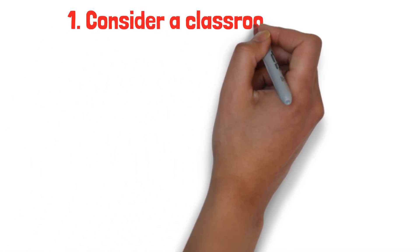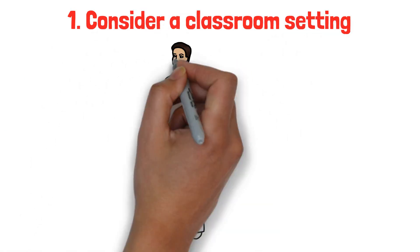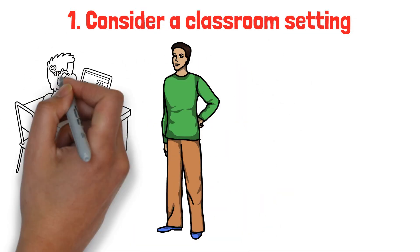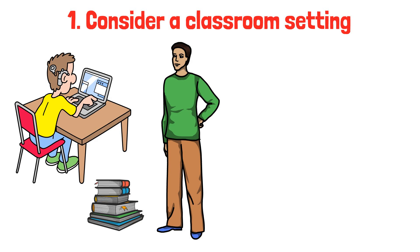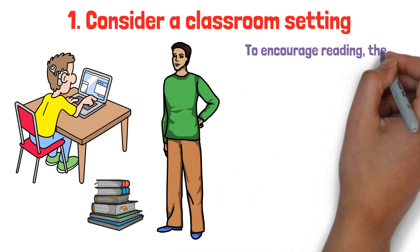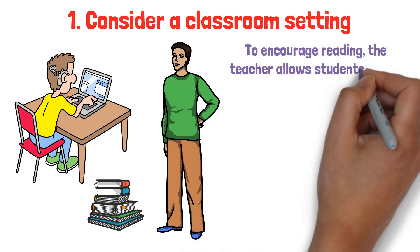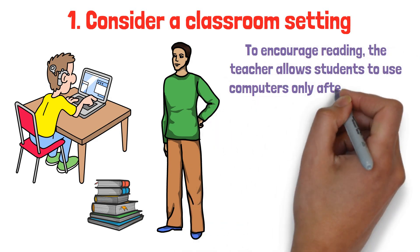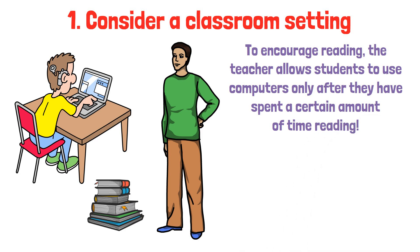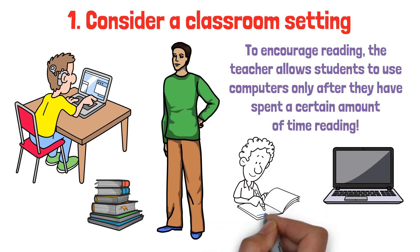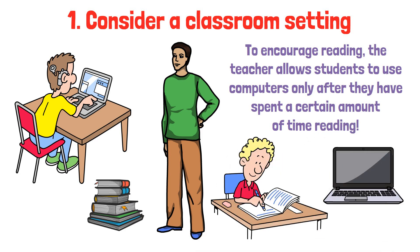First, consider a classroom setting. A teacher notices that students are more interested in using computers than reading books. To encourage reading, the teacher allows students to use computers only after they have spent a certain amount of time reading. The desire to use computers motivates the students to read more.